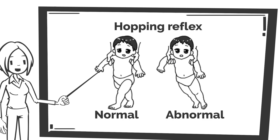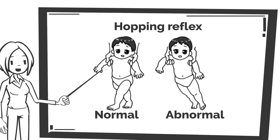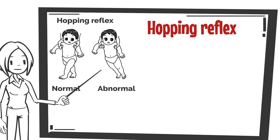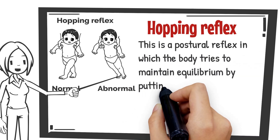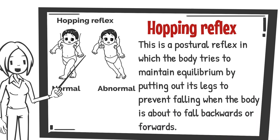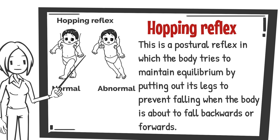Next, I will explain the hopping reflex. While the parachute reflex was a postural reflex related to the arms and hands, the hopping reflex is a postural reflex related to the feet. This is a postural reflex in which the body tries to maintain equilibrium by putting out its legs to prevent falling when the body is about to fall backwards or forwards. Even if the child is not currently walking, the hopping reflex may indicate that the child is ready to walk. This reflex may also be checked at the ten-month check-up in Japan.